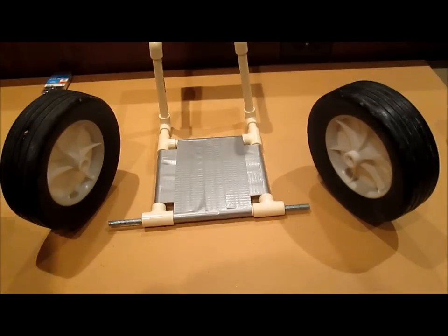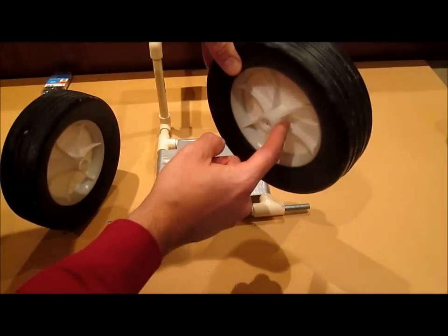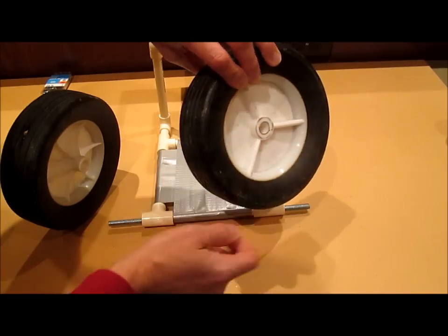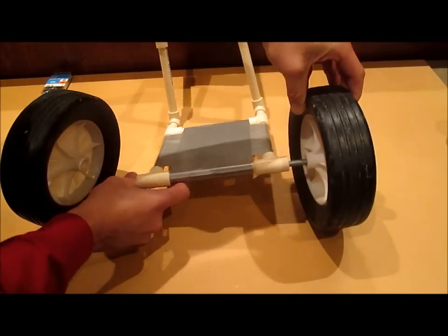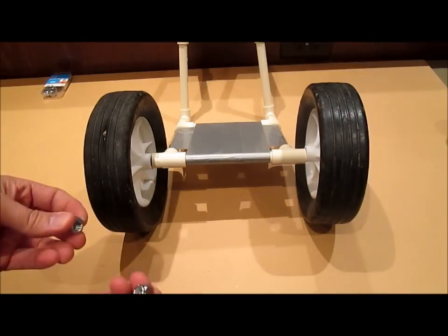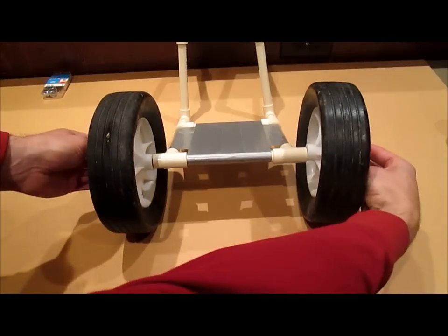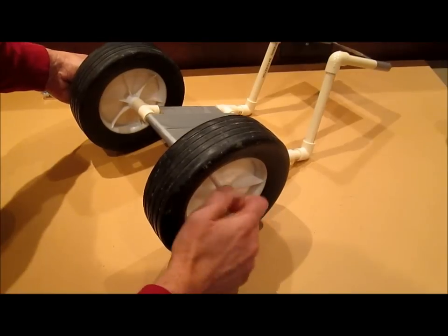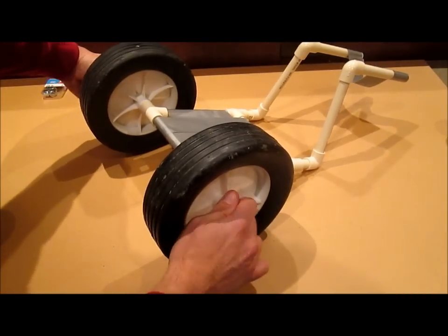And now it's time to put on the wheels. You want to have the sticky out part of the wheel towards the inside and the more flat part towards the outside. Just put them on like this. And then you take your lock nuts and screw them on each side. And tighten those down a little bit with a wrench.